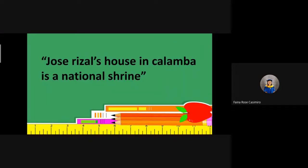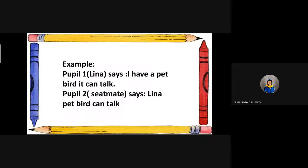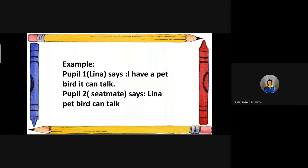Let us proceed. Study these sentences. Whose house in Calamba is a national shrine? Class, whose house is a national shrine? Tell your seatmate about the things that you have. Your seatmate will make a sentence about the things that belong to you.